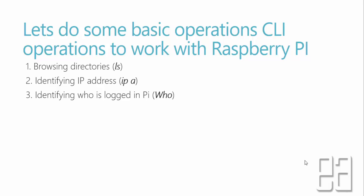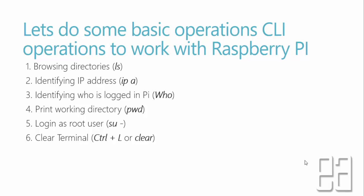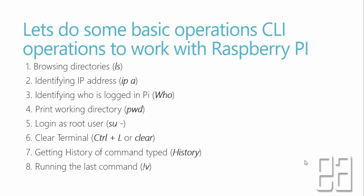You can identify who is logged into your Raspberry Pi using the 'who' command. You can print the working directory using PWD. You can also log in as a substitute user — or super user — using SU with a hyphen. You can clear the terminal using 'clear' or Control+L in your PuTTY terminal. And you can see the history of commands typed so far using the 'history' command, including running the last command using the exclamation mark.